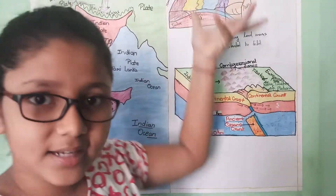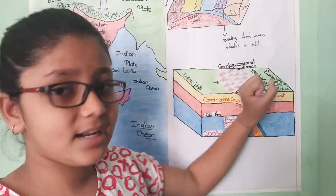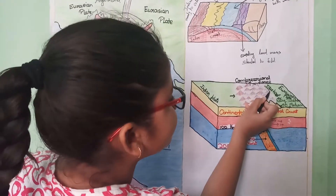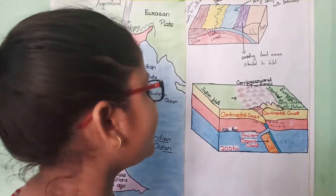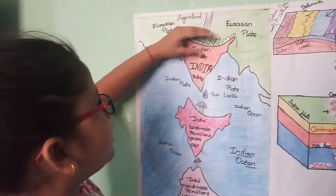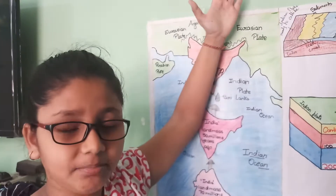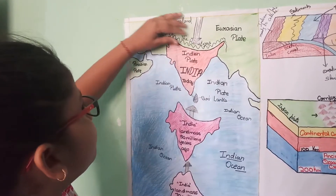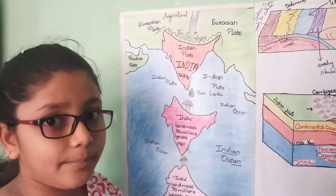The Himalayas started to rise with the silt that the Indian plate carried, and there was a gap behind the Himalayas which is called the Suture Zone. The Suture Zone is the place where two plates collide and make a gap. This is the Suture Zone behind the Himalayas, and here is the rising Tibetan plate. The Suture Zone between the Indian plate and the Eurasian plate is called the Indus-Tsangpo Suture Zone. The Indus River flows here, representing the northern limit of the Himalayas.